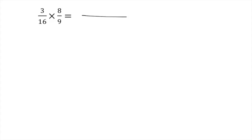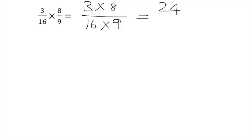If you multiply two fractions together, you multiply the numerators and you multiply the denominators. You can go ahead and just work this out — 3 times 8 is 24, and 16 times 9 is 144. So our answer is 24 over 144.